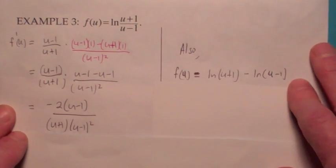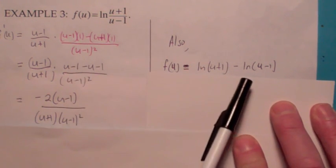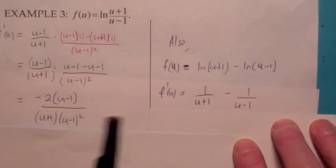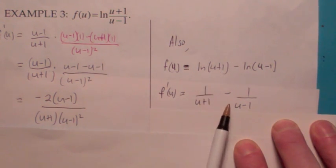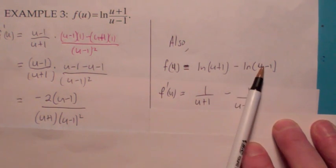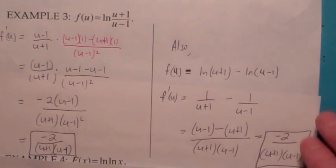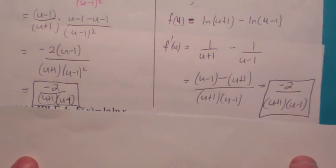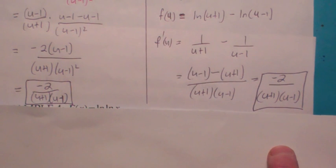However, looking at your rules of logarithms, the logarithm of a quotient is the difference of the logs. So if you do that first, when you differentiate, you just have to take the derivative of each piece. The derivative of the natural log of u plus 1 is 1 over u plus 1 times the derivative of what's inside, which is just 1. Same thing for the second term: 1 over u minus 1 times the derivative of what's inside, which is 1. When you get the least common denominator, which is the product of the two, the u's cancel and you get negative 2 over u plus 1 times u minus 1. This second method is a little easier, so look for ways to simplify first.